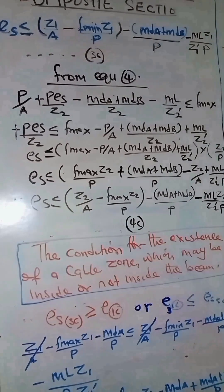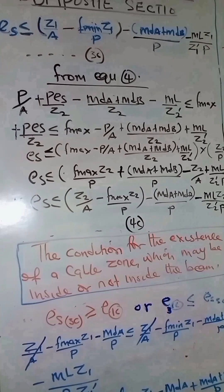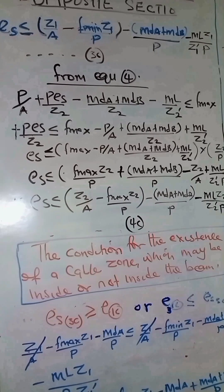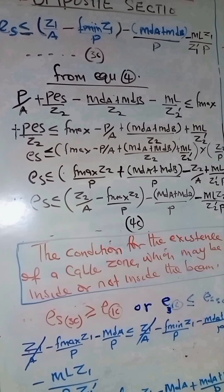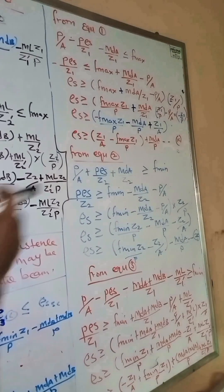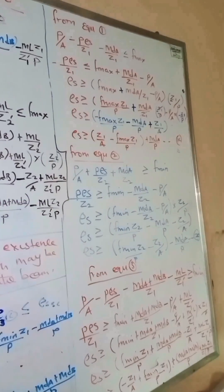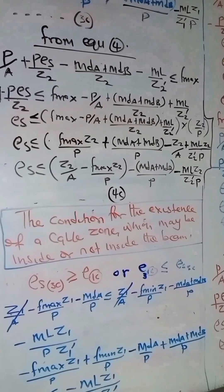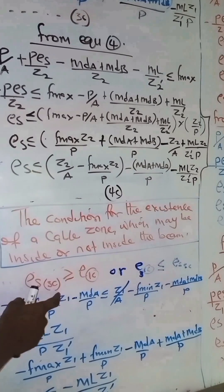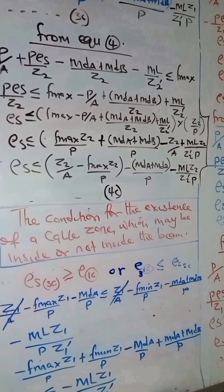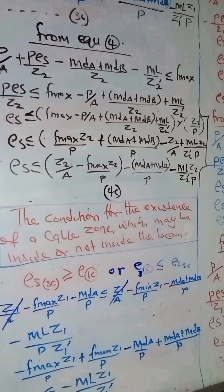Having obtained the four cable zone equations, to establish the operative cable zone we will plot a graph. The graph will be M_L versus P — the live load moment versus the prestressing force. To do that, we compare the equations: comparing equation 3c with equation 1c, since the eccentricity in equation 3c is greater than in equation 1c, we derive an expression for M_L.